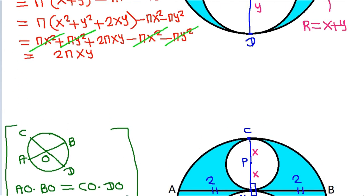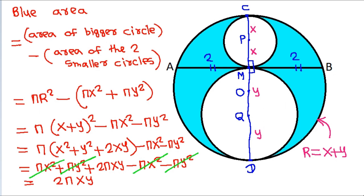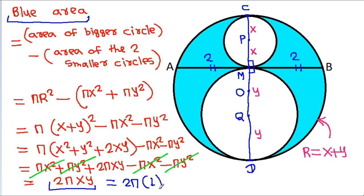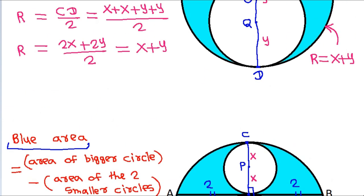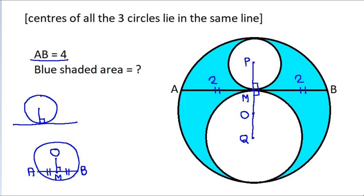We have the blue area equal to 2πXY, and since XY equals 1, the blue area is 2π × 1, which equals 2π.